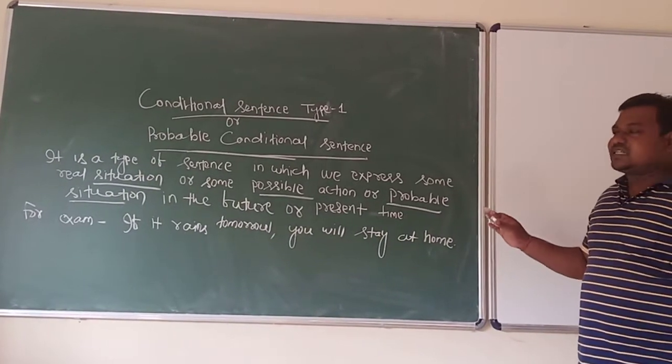To express some threatening or warning, we also use this probable conditional sentence. For example: if you don't work hard, you won't pass the examination. That means it is a warning or a threat to the student — if he will not work hard, he won't pass the examination. So in this case, we have to use the probable conditional sentence type 1.